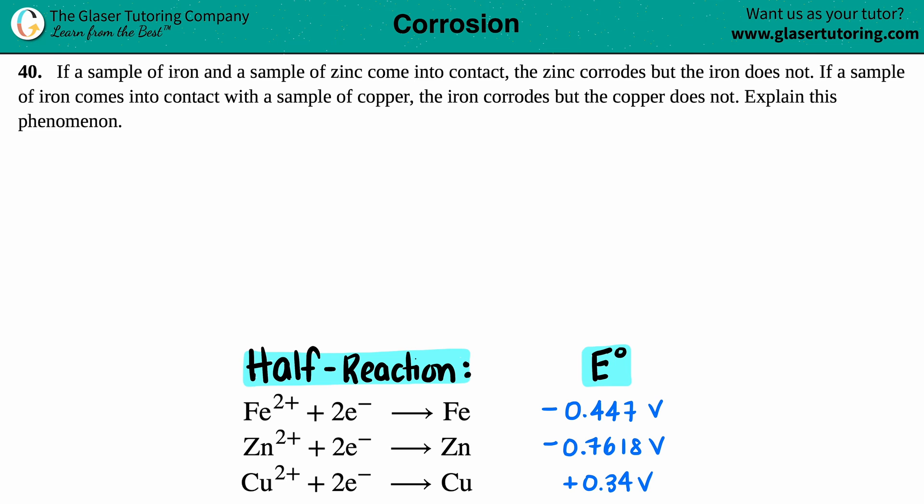If a sample of iron and a sample of zinc come into contact, the zinc corrodes but the iron does not. If a sample of iron comes into contact with a sample of copper, the iron corrodes but the copper does not. Explain this phenomenon. Okay, so let's take it one step at a time.